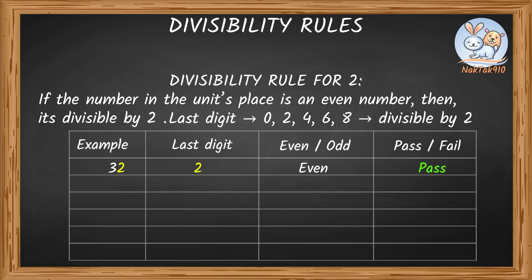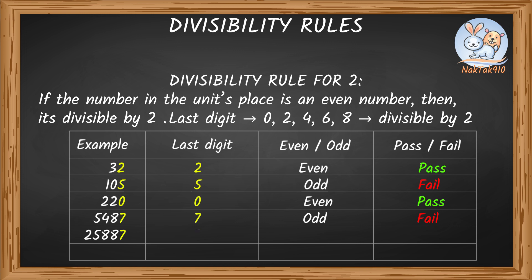Let's do this together. In 105, 5 is not an even number, so the entire number doesn't pass the test. For 120, the last digit is 0 and is an even number, so this entire number is divisible by 2. For 5,487, 7 is not an even number, so it doesn't pass the test. 25,887 ends with 7, an odd number, so it's not divisible by 2. And 35,482 ends with 2, an even number, so it is divisible by 2.